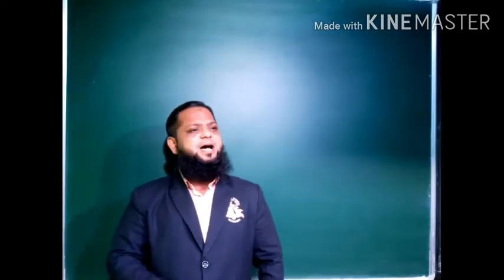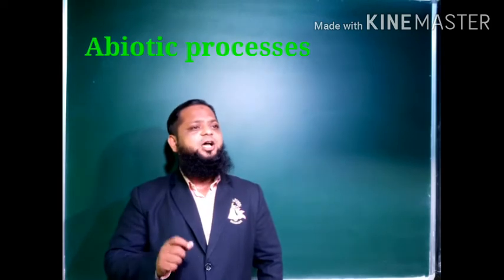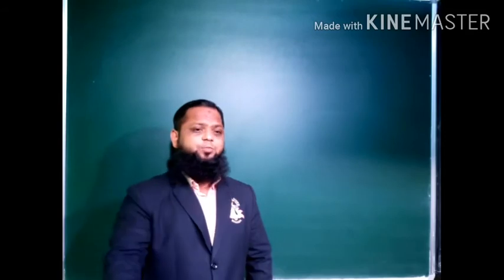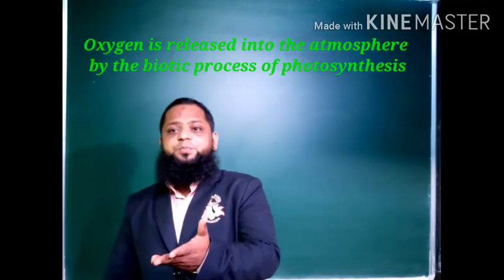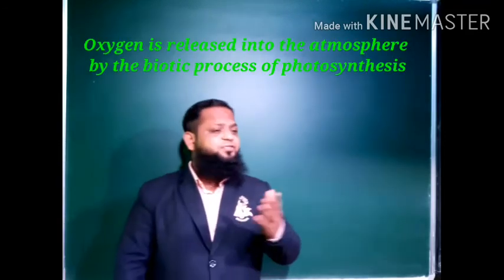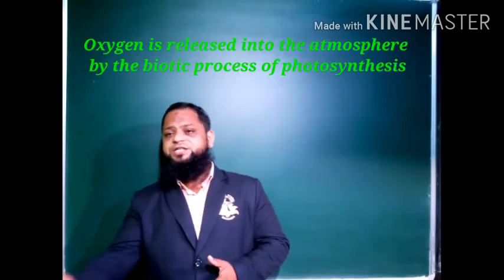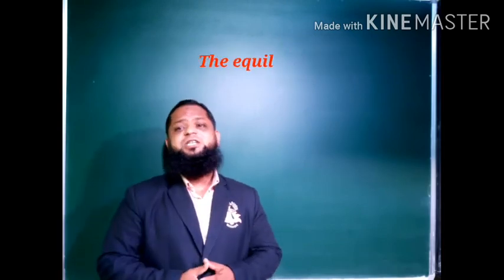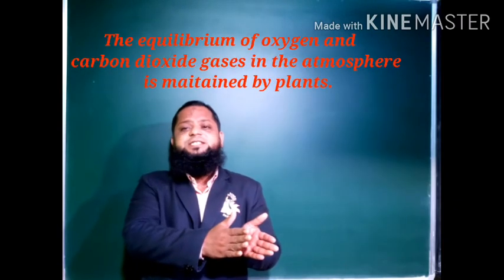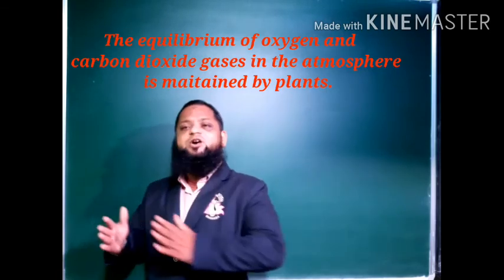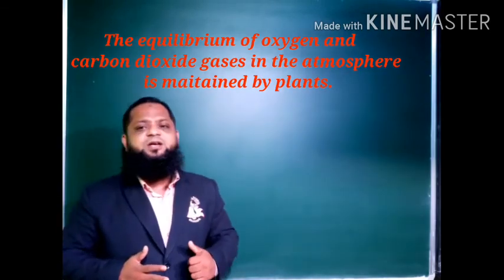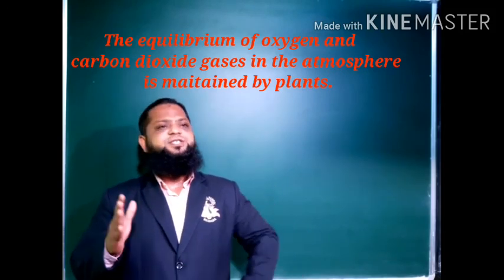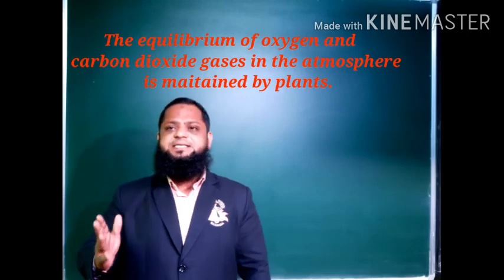These are all examples of abiotic processes. Oxygen is released into the atmosphere by biotic processes, mainly photosynthesis. Carbon dioxide is released through respiration. The equilibrium of oxygen and carbon dioxide gases in the atmosphere is maintained by plants. This is all about the carbon cycle. Thank you.